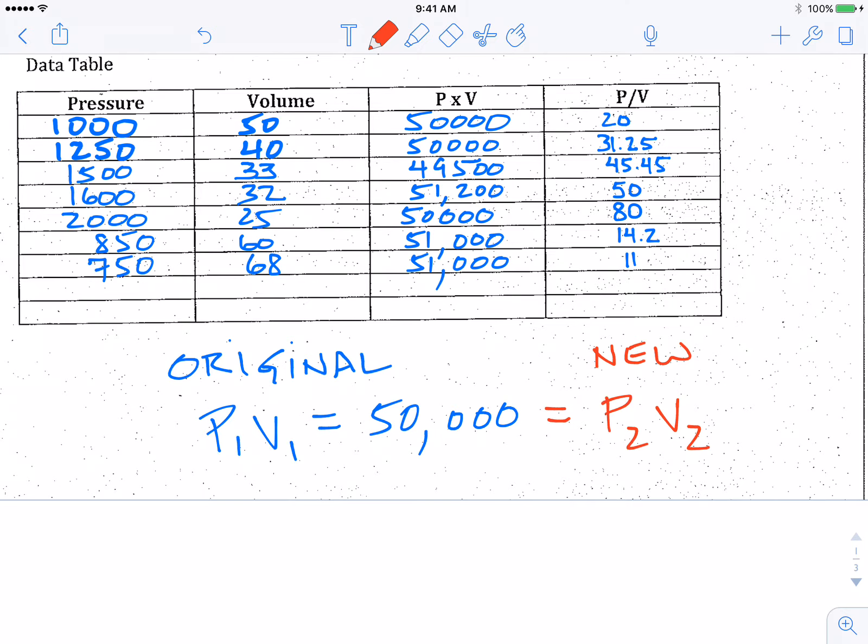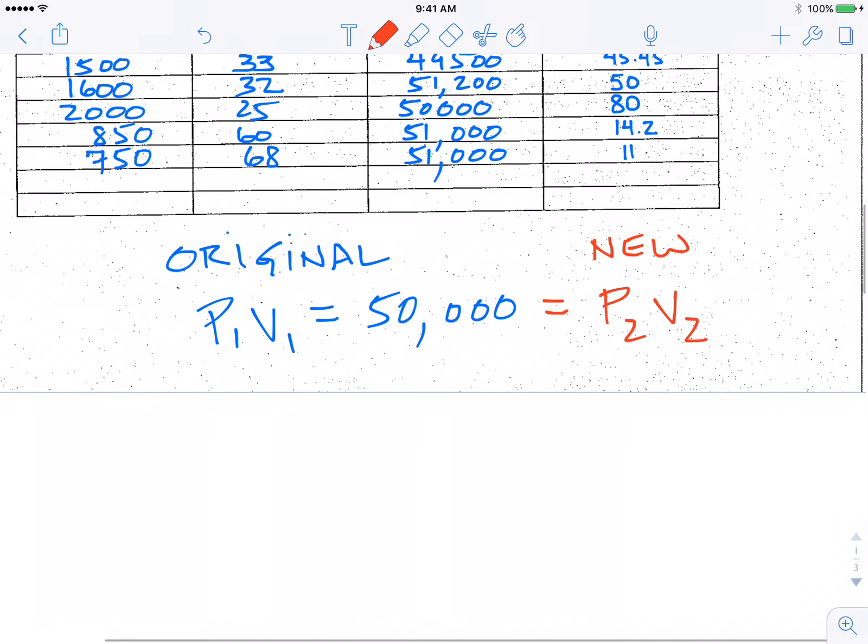So what we can do with this, since one set of pressure and volume numbers equal the same as the second set of pressure and volume numbers of that gas, what we can do is set P1V1 equal to P2V2.